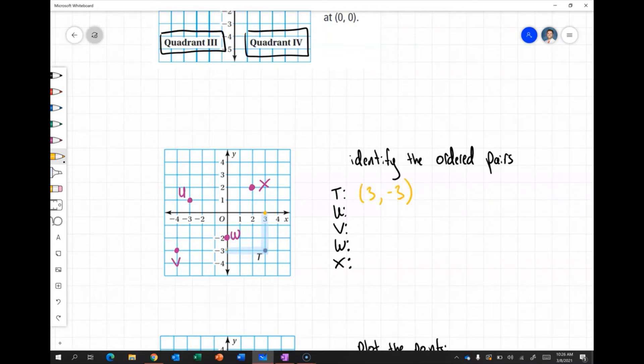Okay then if I look at the next point U, I see that U is at negative 3 on the x-axis and positive 1 on the y-axis. So I could write the ordered pair negative 3, 1.